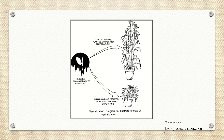Now we will come to this diagram. This diagram shows a slightly germinated seed which is kept at 5 degrees Celsius. This seed, when treated with chilling temperature, gives a growth which is pretty luxuriant.